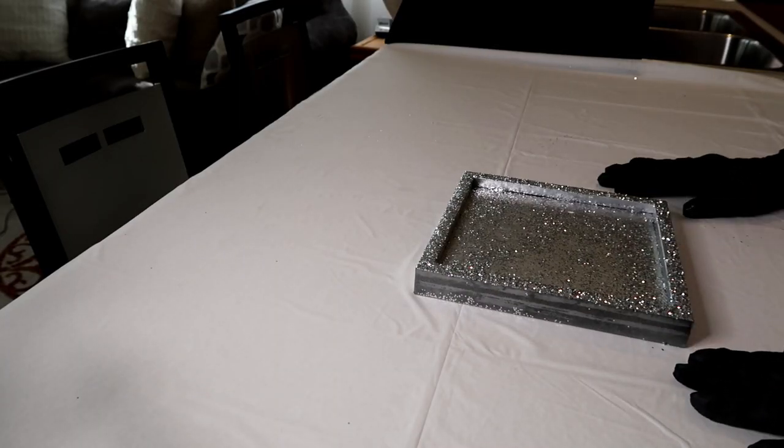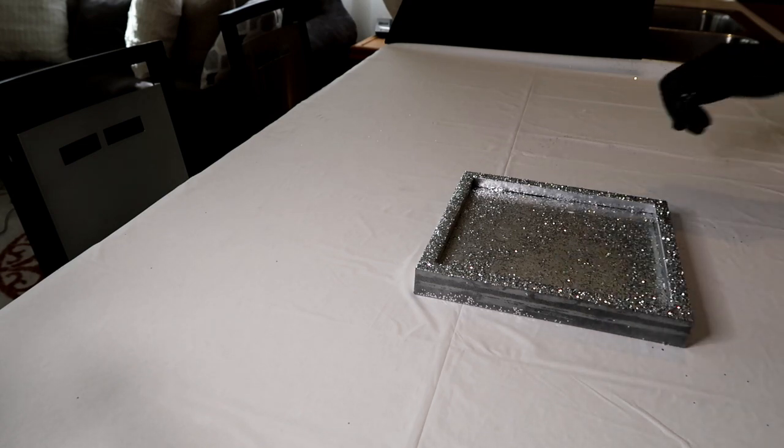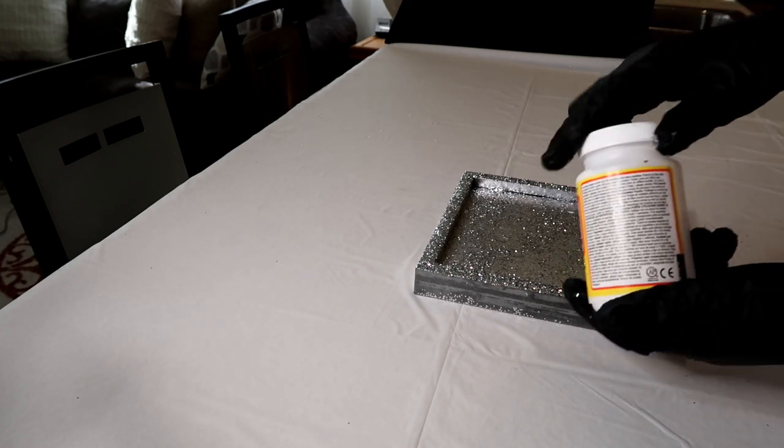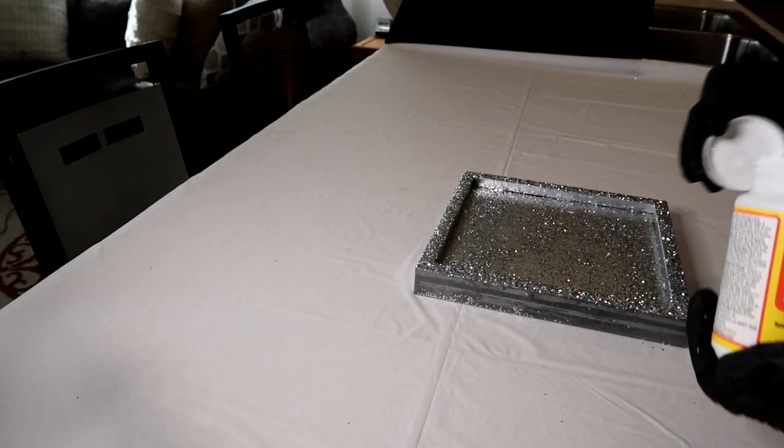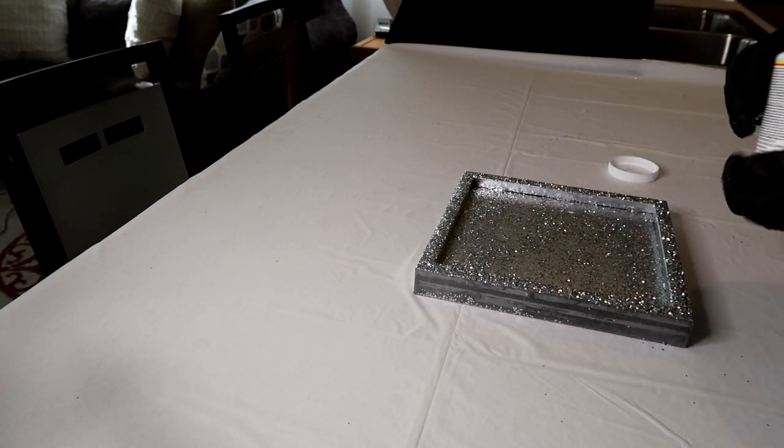Now that our glitter has dried on the top of the tray, we're going to go ahead and add some Mod Podge to the sides of the tray so that we can finish the tray by adding more glitter to it.